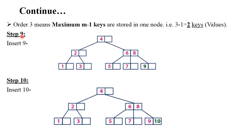Next, insert 9: we insert 9 after 8. With 6, 8, and 9, the middle node 8 becomes the root of that subtree and 9 becomes a leaf node. After that, insert 10: 10 is inserted after 9.